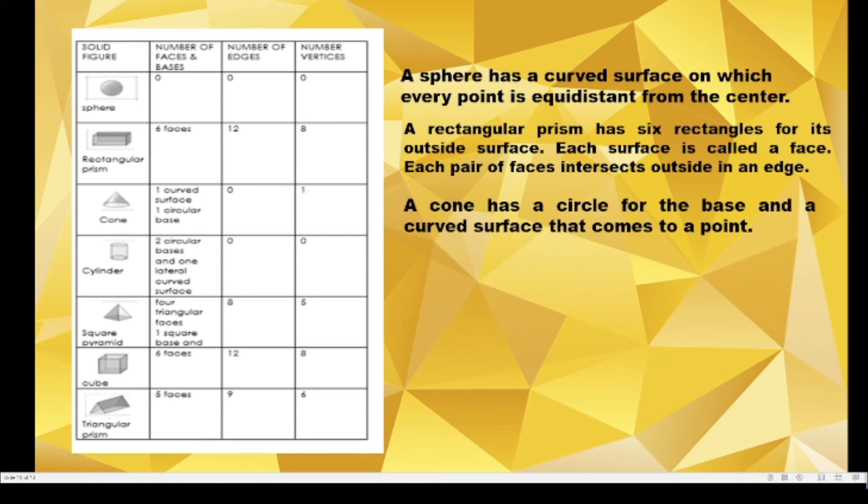The next one is a cone, has a circle for the base and a curved surface that comes to a point. A cylinder has two equal and parallel circles as bases and a lateral curved surface.